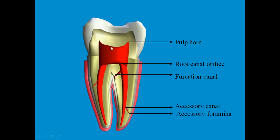The projections of the pulp into the cusps are called pulp horns. The extensions of the pulp into the root are accessed at the root canal orifice. The pulp chamber narrows down and enters the root as the root canal, and that entry point is called the orifice.